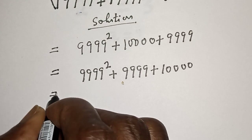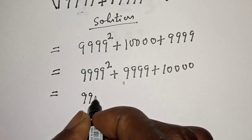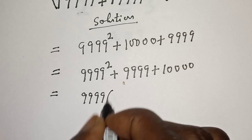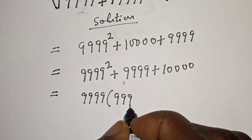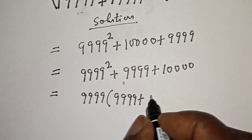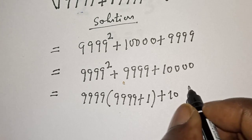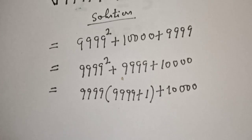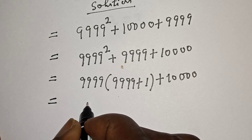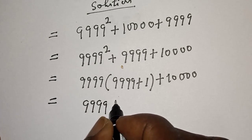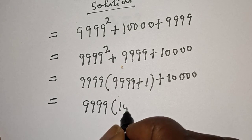This is equal to — now we can bring 9,999 out. We have 9,999 times bracket: if you divide the first term by 9,999 we get 9,999, then plus 1 from the second term. Then plus 10,000. So this gives us 9,999 times bracket 9,999 plus 1, which equals 10,000, then plus 10,000.